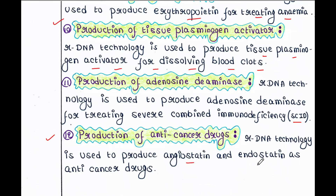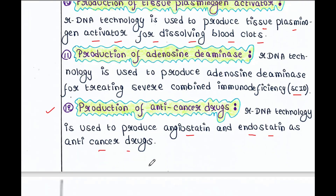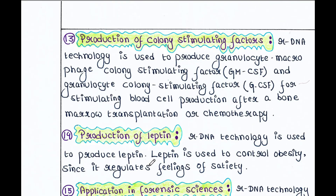Next is production of anti-cancer drugs. rDNA technology is used to produce angiostatin and endostatin as anti-cancer drugs. Next is production of colony stimulating factors. rDNA technology is used to produce granulocyte macrophage colony stimulating factor (GM-CSF) and granulocyte colony stimulating factor (G-CSF).